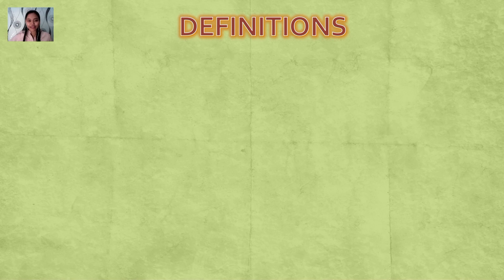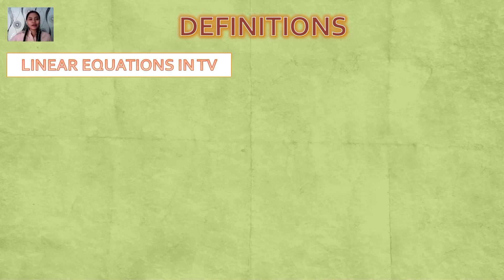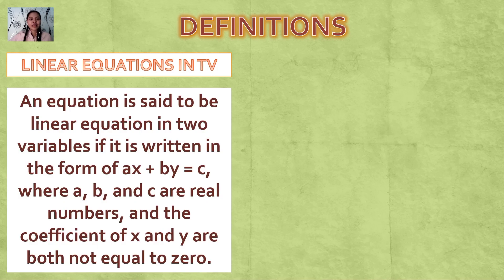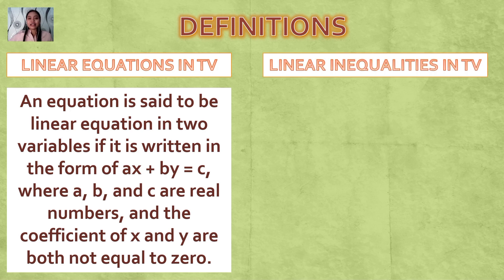Let's first define each term. Let's start with linear equations in two variables. It is said to be a linear equation in two variables if it is written in the form AX + BY = C. This is the standard form, where A, B, and C are real numbers, and the coefficients of X and Y are both not equal to zero.